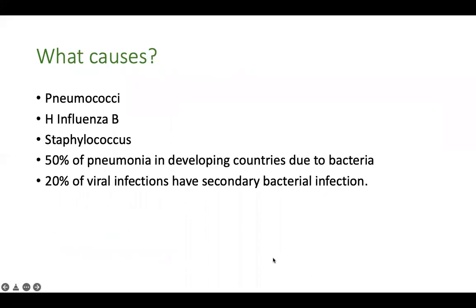What causes pneumonia? In developed countries, only 11 to 12% of cases occur due to bacteria - the rest is usually viral. Whereas in developing countries, more than 50% of pneumonia is believed to occur due to bacteria, because nasopharyngeal carriage of bacteria is far higher. Additionally, 20% of viral infections also have secondary bacterial infection. Common organisms in this age group are pneumococci, H. influenzae, and staphylococcus.